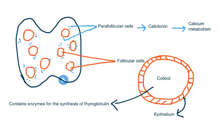This is the thyroid gland, and these orange circles which you see are follicular cells. Around these follicular cells, there are small parafollicular cells as well. The parafollicular cells secrete calcitonin, and calcitonin is responsible for calcium metabolism. The follicular cells of the thyroid gland, if we zoom in, have a cuboidal epithelium and inside there is a colloid material. This colloid contains the enzymes for the synthesis of thyroglobulin, and from here all the biochemical reactions start for the formation of thyroid hormones.